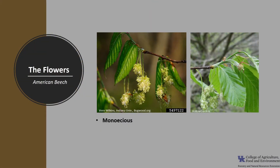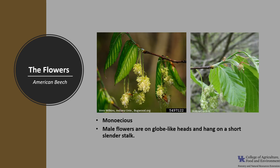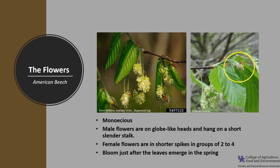American beech is monoecious, which means trees will have both male and female flowers. The male flowers are on globe-like heads and hang in short, slender stalks. The female flowers are in shorter spikes in groups of two to four. The flowers bloom just after the leaves emerge in the spring, and the flowers are wind-pollinated.